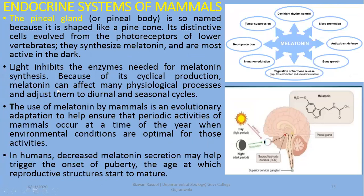Light inhibits the enzymes needed for melatonin synthesis, while dark induces and stimulates its production. This way melatonin is produced in a cyclic manner, and due to this cyclic production, it is considered to be involved in the regulation of many cyclic activities — diurnal activities and seasonal cycles are considered to be regulated by melatonin.